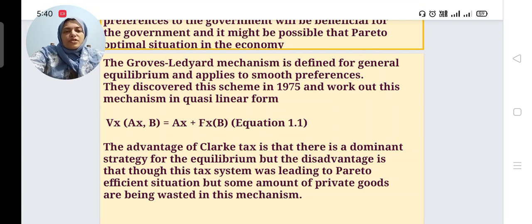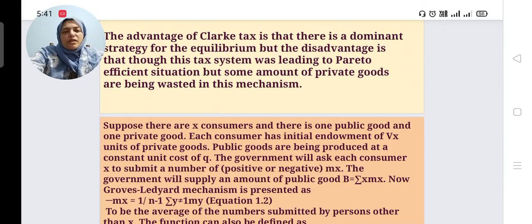They discovered the scheme in 1975 and worked out this mechanism in a quasi-linear form that is v(x) function of (a,b) that is equal to ax plus f(x) function of b, considered as equation 1. The advantage of Clarke tax is there is a dominant strategy for the equilibrium, but the disadvantage is that this tax system was leading to Pareto efficient situation, but some amount of private goods are being wasted in this mechanism.